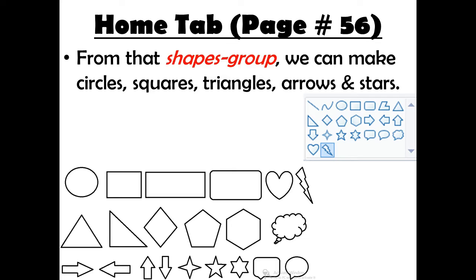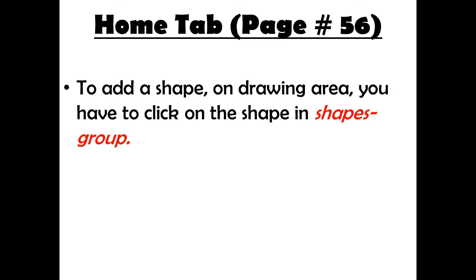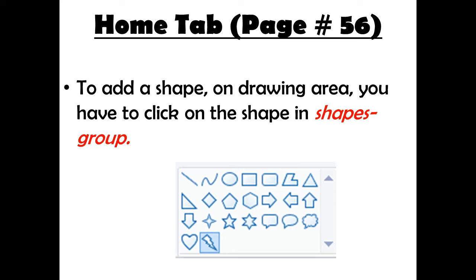To add a shape on the drawing area, you have to click on the shape in the Shapes group. As mentioned, you can select any shape from the Shapes group, and to add a shape on the drawing area, you click on it in the Shapes group.